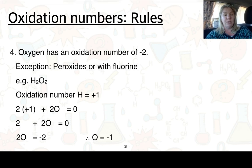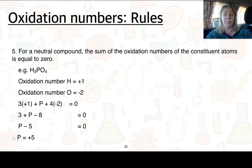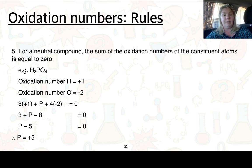Rule 4: oxygen has an oxidation number of −2. The exception is with a peroxide or with fluorine. In H2O2, hydrogen is +1 per rule 3, so 2×(+1) plus 2×(oxygen) equals zero, giving oxygen as −1 — that's the peroxide exception. Rule 5: for a neutral compound the sum of the oxidation numbers of the constituent atoms equals zero. For example in H3PO4, each hydrogen is +1 and each oxygen is −2, so 3×(+1) + P + 4×(−2) = 0, giving P = +5.